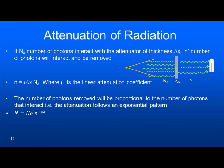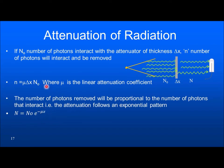Next, we will look at attenuation of radiation. If N₀ is the number of photons interacting with an attenuator of thickness Δx, and N is the number removed, then N = μ·Δx·N₀, where μ is the linear attenuation coefficient. The attenuation follows an exponential pattern: N = N₀e^(−μx), where x is the thickness of the material.